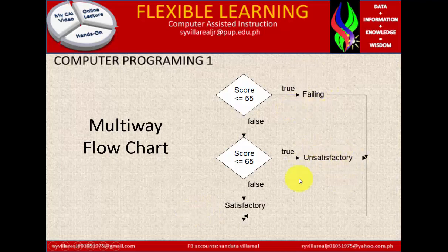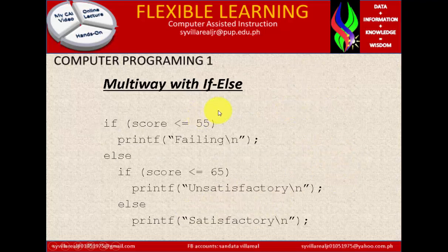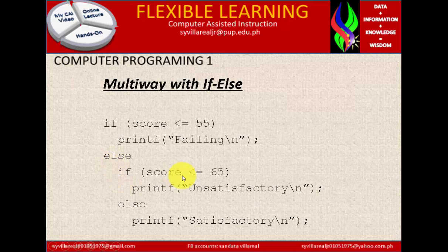So we have: failing, unsatisfactory. Now, the multi-way if-else code: if score is less than or equal to 55, printf failing. Else, if score is less than or equal to 65, printf unsatisfactory. Else, printf satisfactory.